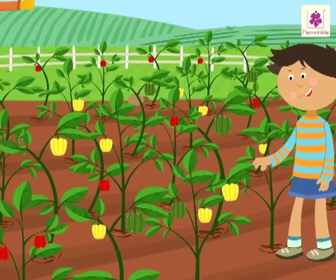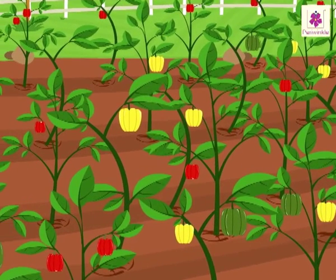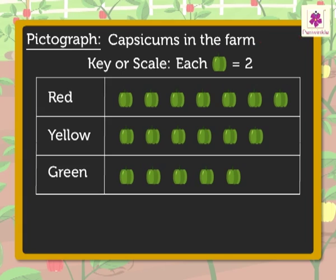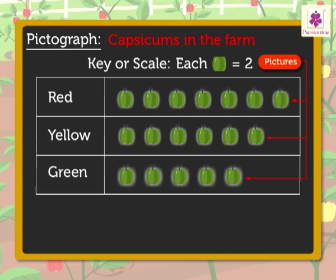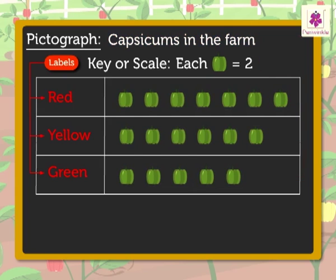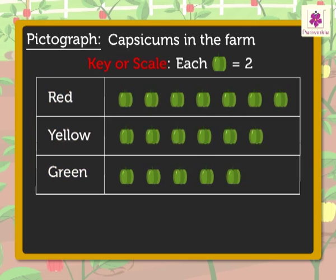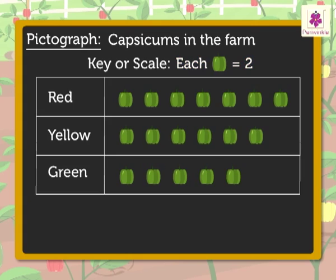Joy visited a farm which was full of red, yellow, and green capsicums. Now let us read this pictograph. The title 'Capsicums in the Farm' tells us the pictograph is about the number of capsicums in the farm. The labels give us the information on the colours of the capsicums. The key or scale tells us that each capsicum picture is equal to 2 capsicums.